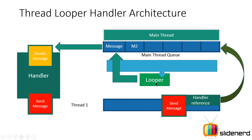Remember, the Looper and Handler are very specific to the main thread in this context. To be honest, each thread can have its own Looper and its own Handler. For now, the main thread is the one that has its own Looper — taking one message at a time — and its own Handler that picks messages up and runs them. Other threads can use a reference to this Handler to send messages to the main thread. This is the true working architecture of the Thread, Looper, Handler pattern in Android.